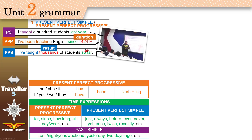When did it start? It started in 1424. Since — since 5 o'clock, since Saturday. If you say '5 hours,' you use 'for.' If you say '5 o'clock,' you use 'since.' You also use 'how long,' 'all day,' 'all my life,' 'all year long.'